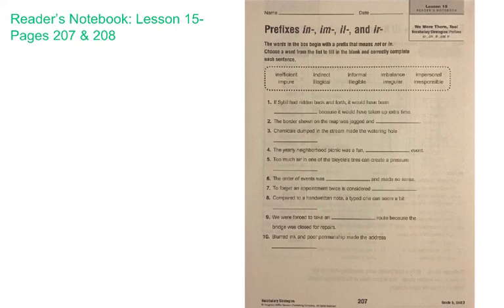Number one says if Sibyl had ridden back and forth it would have been blank because it would have taken up extra time. Okay, so something that would have taken up extra time, not the most efficient route, not the most productive way. We're going to say that number one is inefficient.